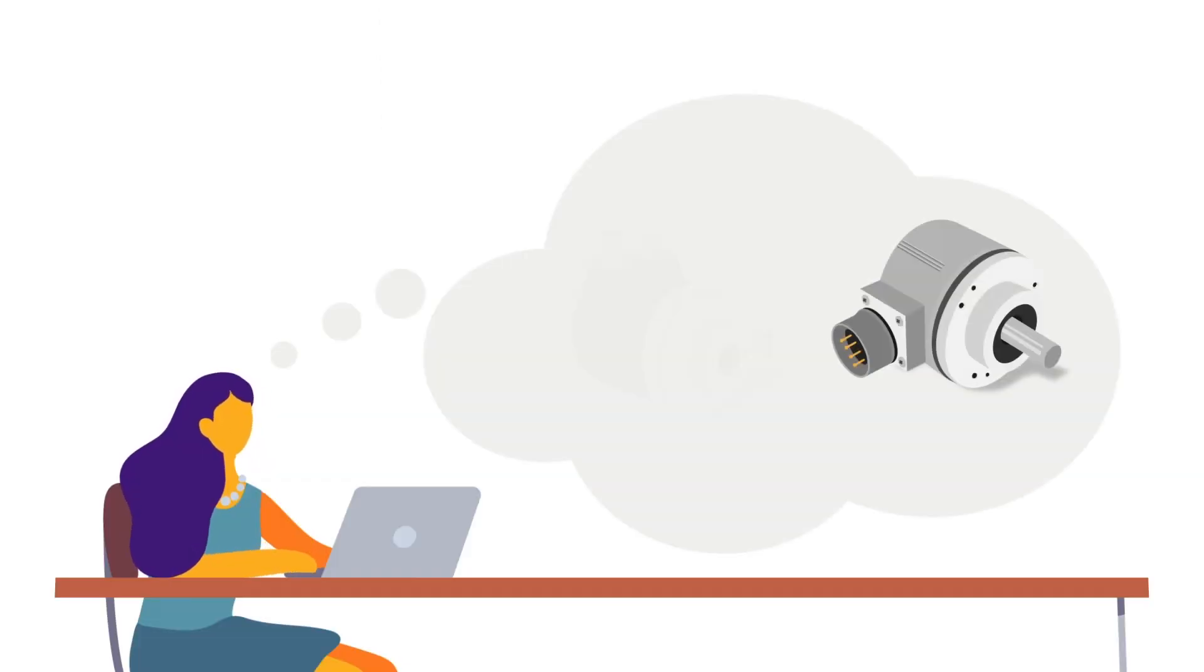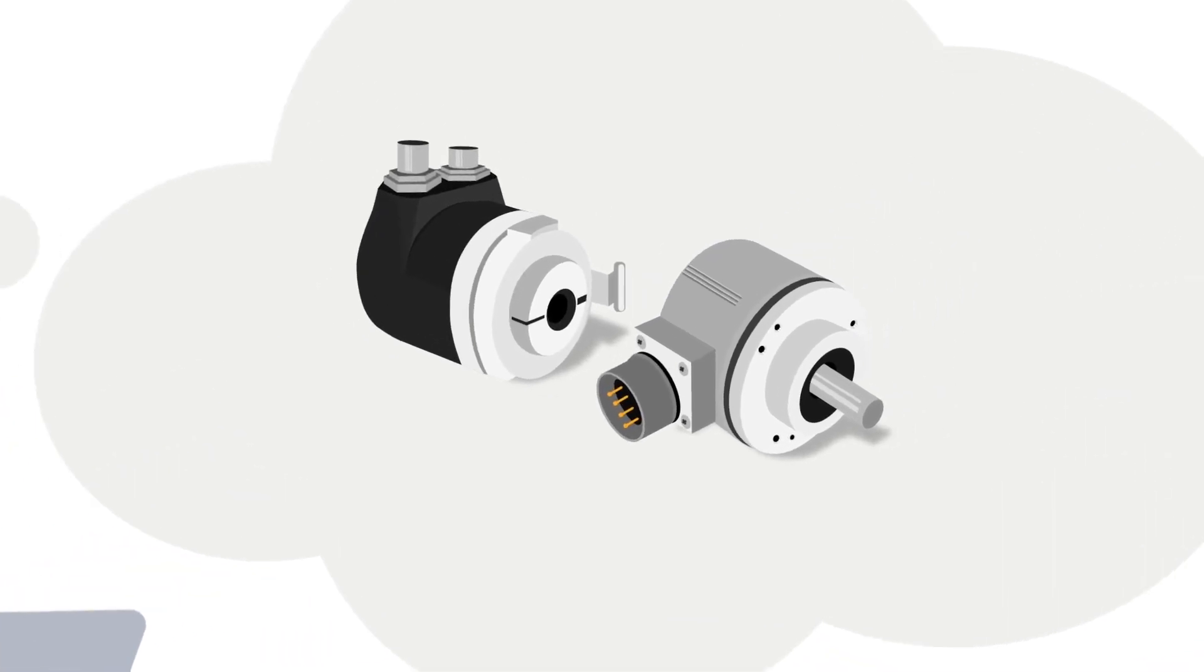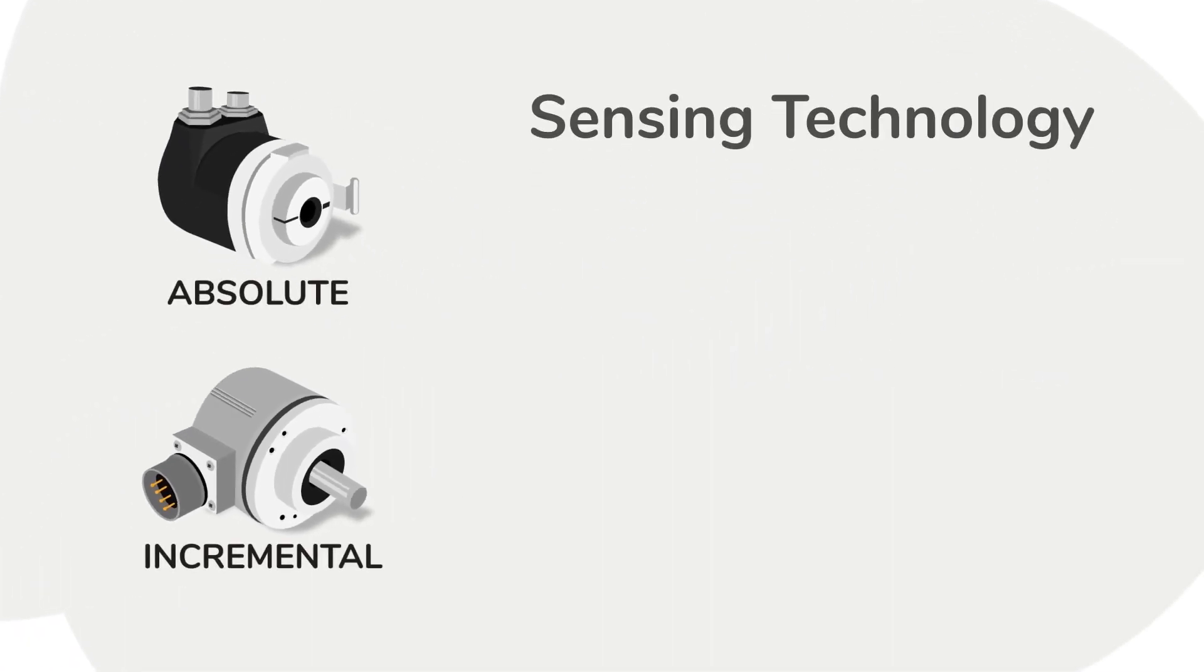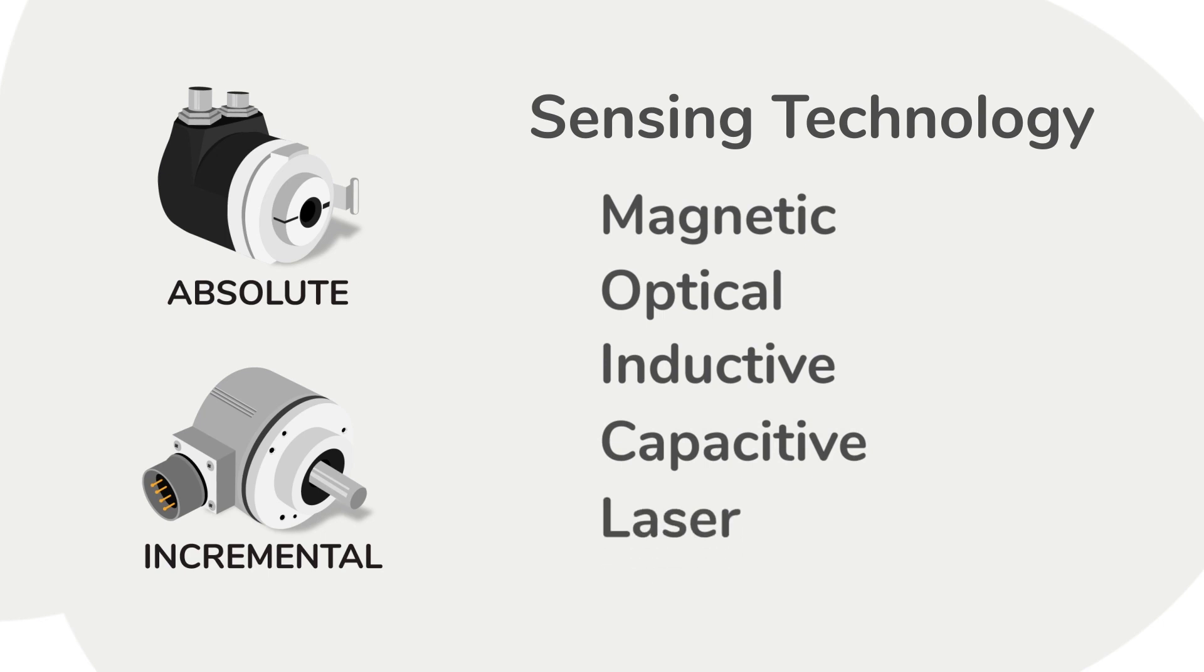After deciding on an incremental or absolute encoder, your next step is to pick a sensing technology. Though there are a lot of options on the market, choosing the right sensing technology does not have to be overwhelming. Let's take a look at two of the most common types, magnetic and optical sensors.